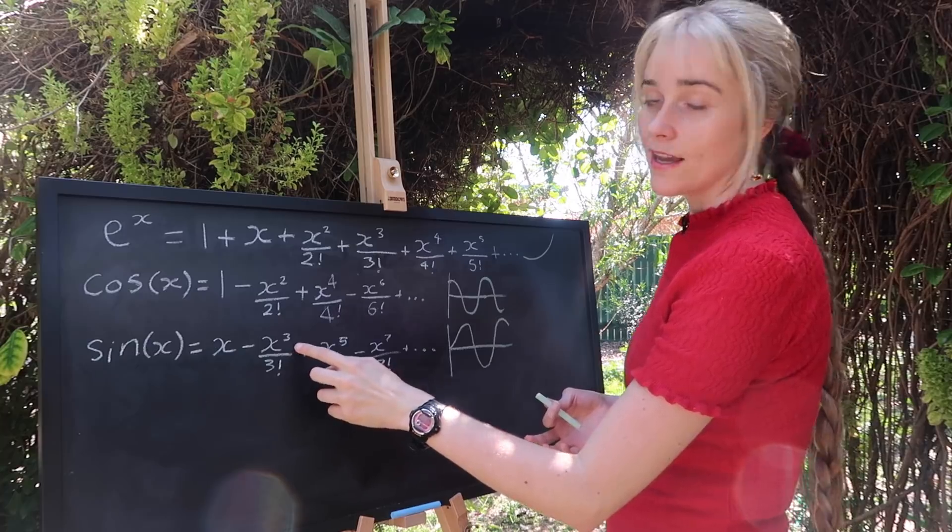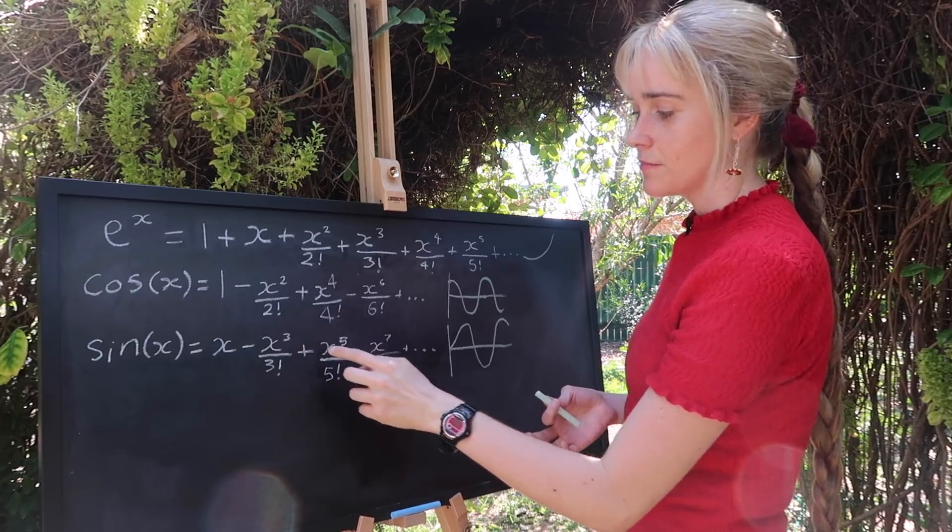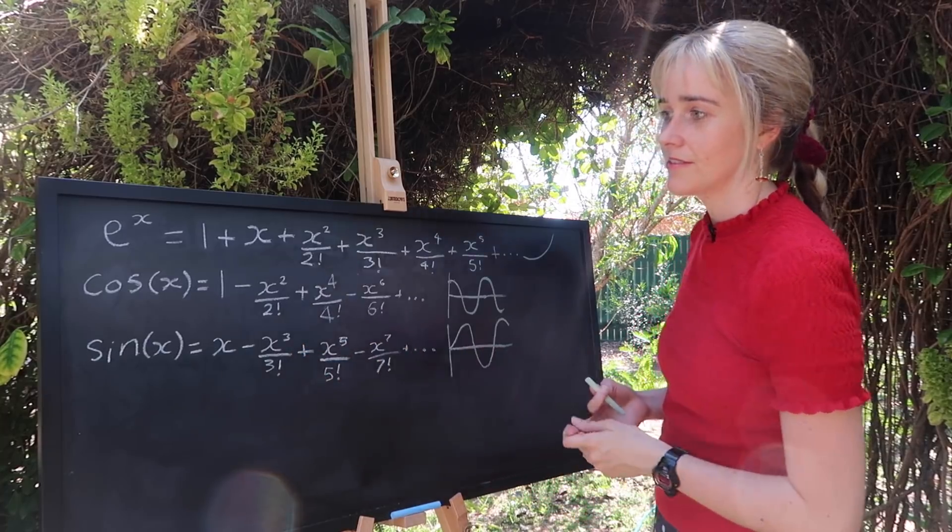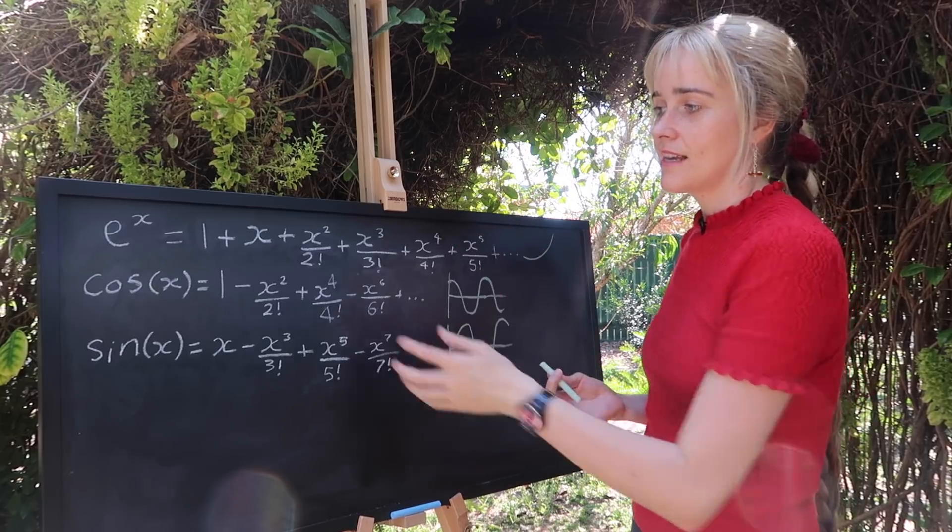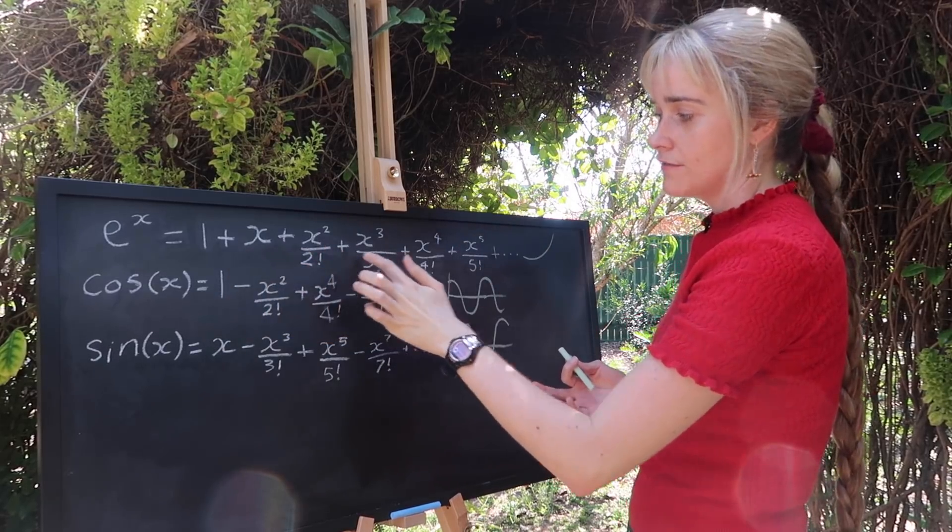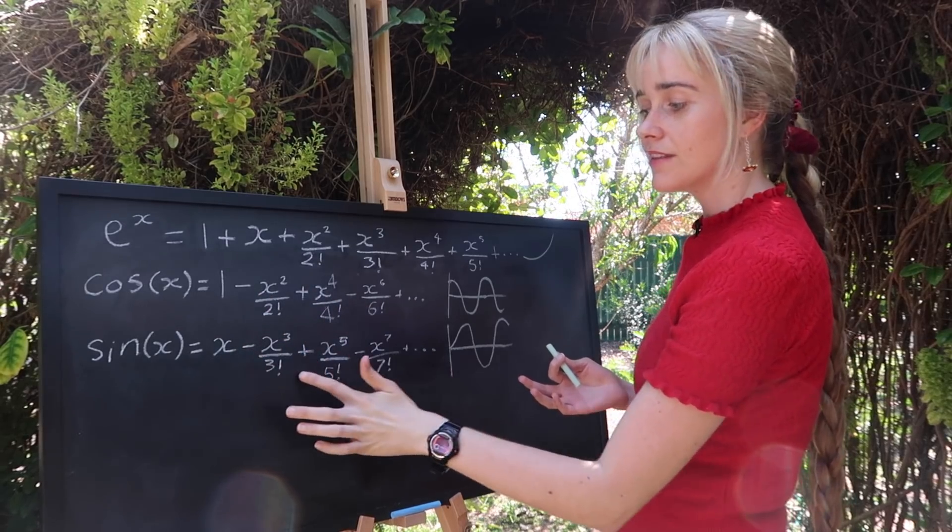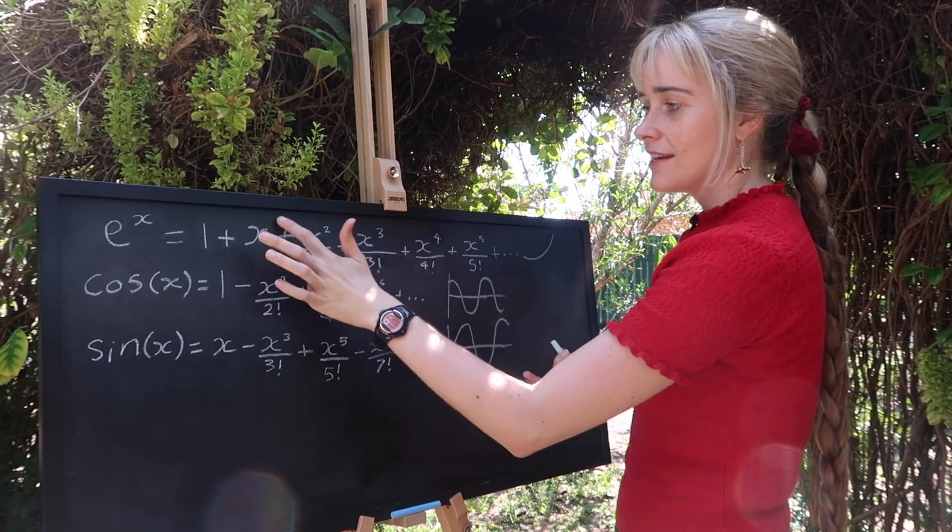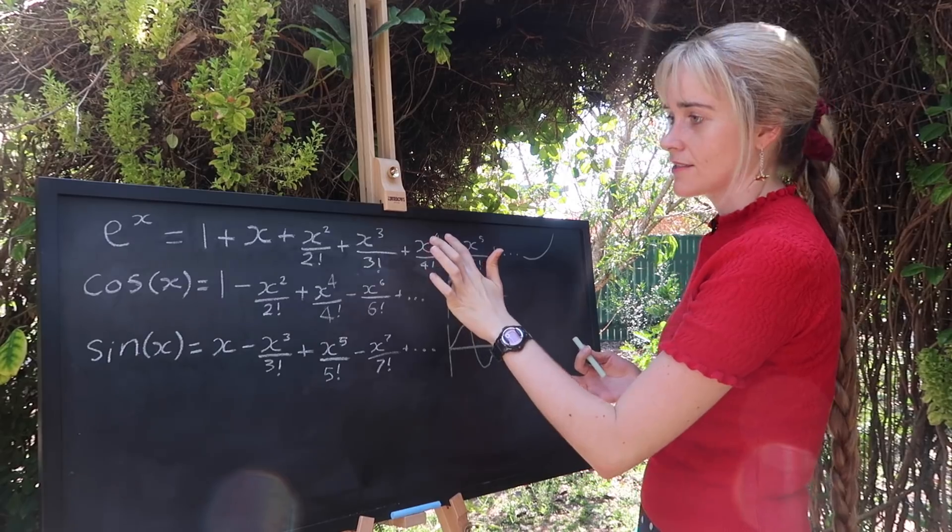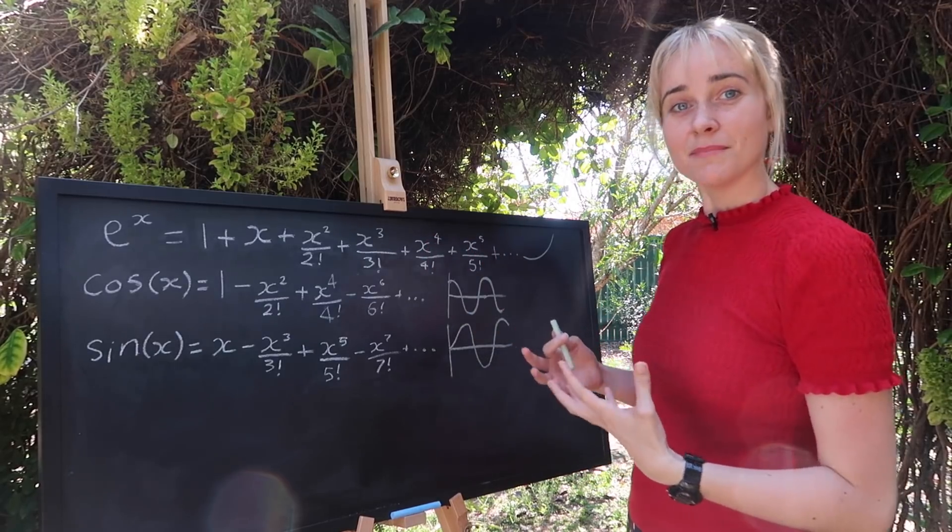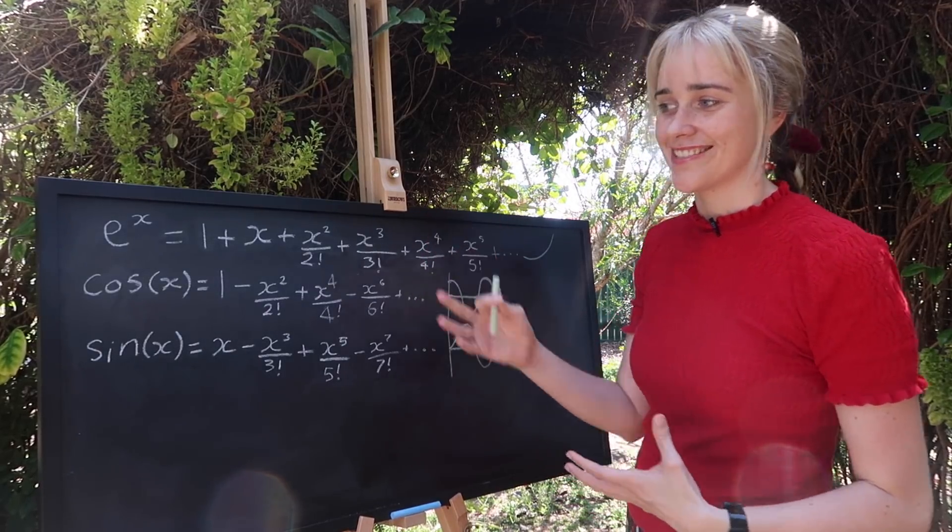And in sine, the odd terms. x cubed, x to the 5, x to the 7. And in e to the x, all the signs are positive. We don't have this alternating positive negative like we did down here. And we have every power of x.